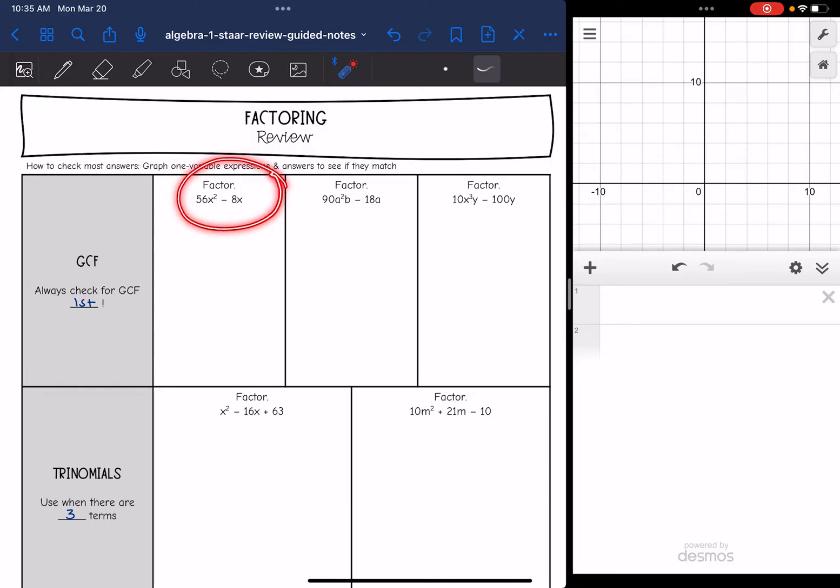So this first one right here is going to be a perfect example to do that. My only variable is x, so I will graph the problem and the answer I get to make sure that they match.